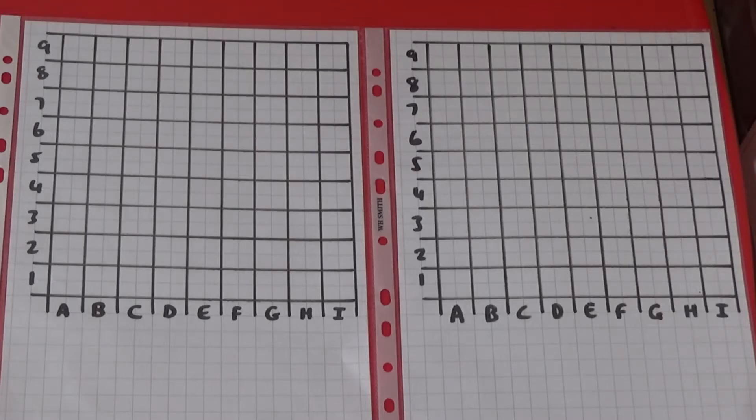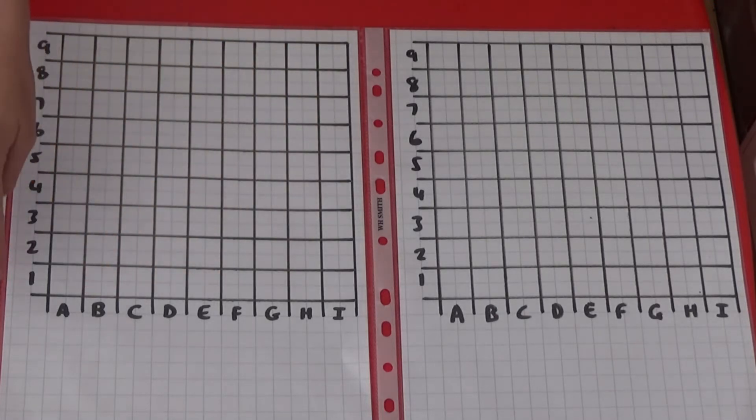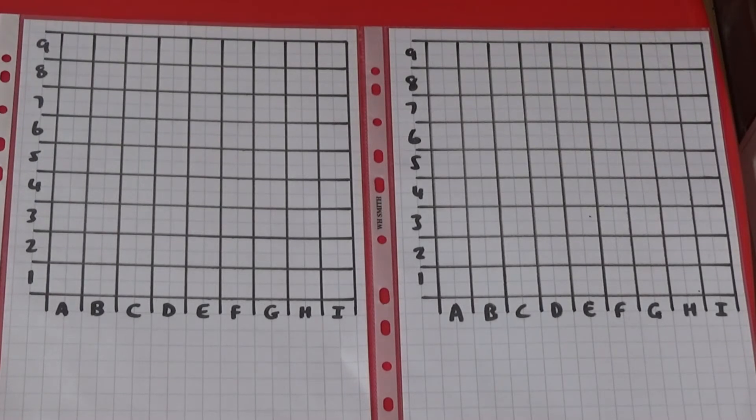Each player needs to draw two grids marked out with letters on the X axis and numbers on the Y axis. I've put each grid in a plastic wallet so it can be reused, rather than drawing it out for each game.